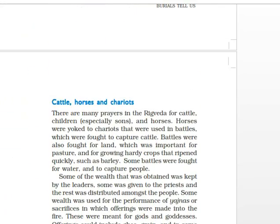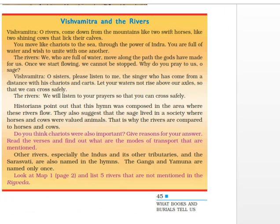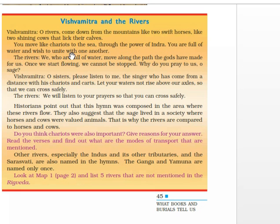Vishwamitra says to the river: 'All rivers come down from the mountains like two swift horses, like two shining cows. Like cows, you move like chariots to the sea. Through the power of Indra you are full of water and wish to unite with one another.' The river replies: 'We who are full of water move along the path the gods have made for us. Once we start flowing, we cannot be stopped. So why do you pray to us, oh sage?'